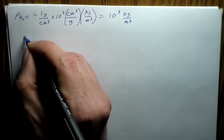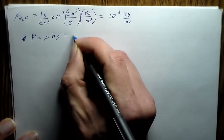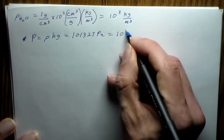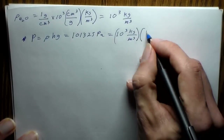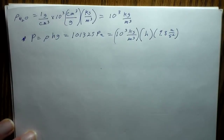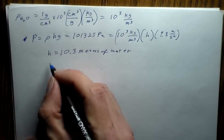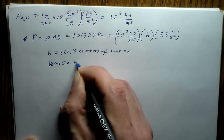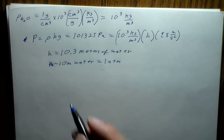This works out to 10.3 meters of water. Approximately 10 meters of water is equivalent to one atmosphere — a pretty easy number to remember. This is useful when thinking about pumping and how high water can go without any external influence.